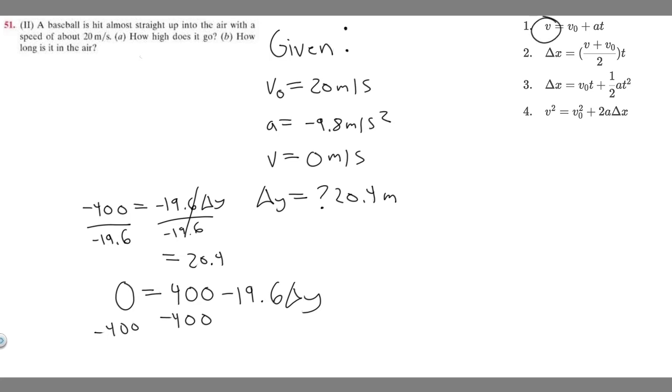What you're going to want to do is set v equal to zero just like before. So 0 equals v₀ which is 20, plus a which is minus 9.8, times t. Let me actually solve it first. If you subtract 20, you'll get minus 20 on this side equals minus 9.8t.